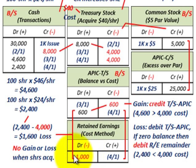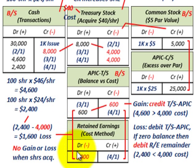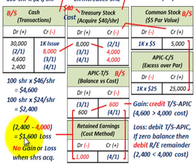We would debit or reduce our retained earnings by $1,000. We received $2,400 in cash, but we had to record our treasury stock at $40 per share, which was $4,000. So we had to account for that $1,600 loss. It flowed into retained earnings — debit that for the difference between the $600 debit amount and the $1,600 loss, which gives us retained earnings of $1,000.